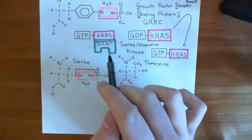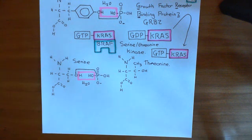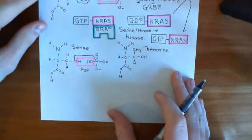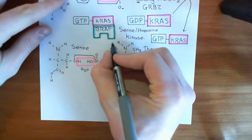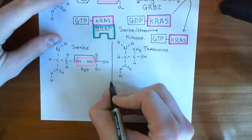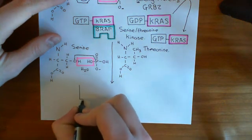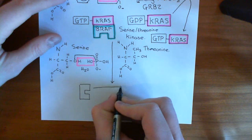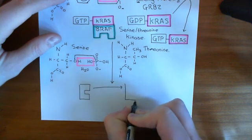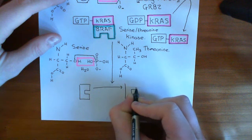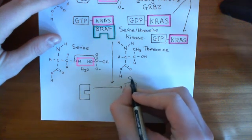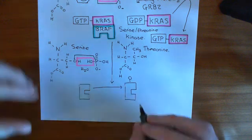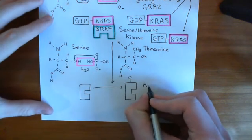So that's what BRAF is — it's going to add phosphate groups onto serine and threonine residues of other proteins. One of the proteins which it adds phosphate groups onto is a protein known as MEK, or MEK kinase. Here is the MEK kinase, and basically when BRAF adds a phosphate group onto it, it activates this MEK kinase enzyme.